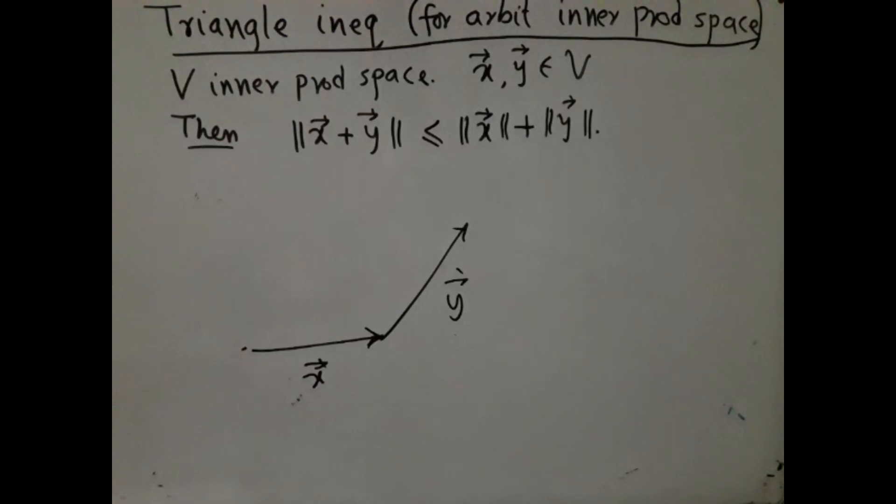We had mentioned that the norm induced by an inner product will satisfy this, but we have not proved it. Now we are in a position to prove it because it requires Cauchy-Schwarz inequality. Now why is it called triangle inequality?